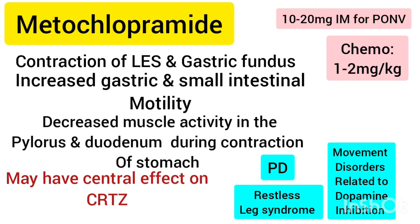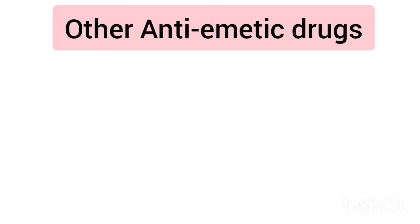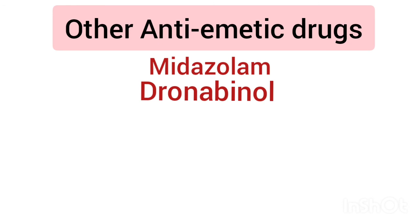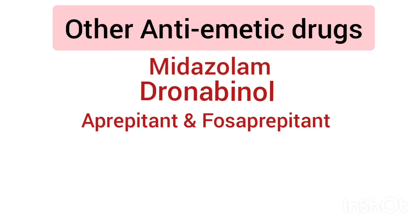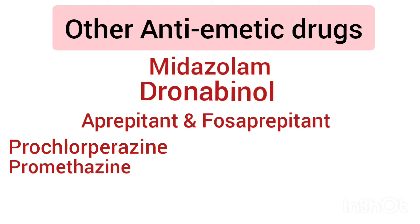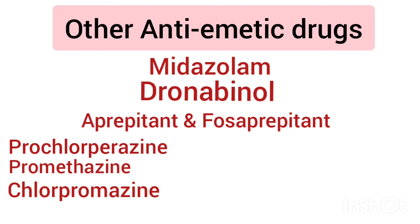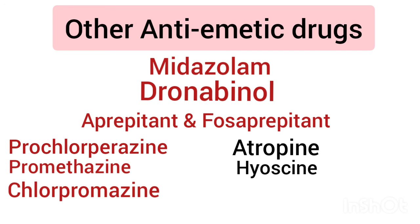Some other drugs with anti-emetic properties include midazolam, dronabinol, Neurokinin-1 antagonists like aprepitant and fosaprepitant, phenothiazines like prochlorperazine, promethazine, and chlorpromazine. Last but not the least are anti-cholinergic drugs like atropine, hyoscine, and scopolamine.